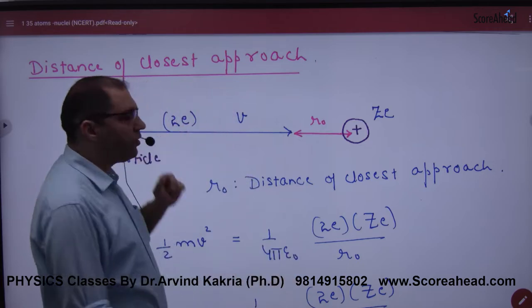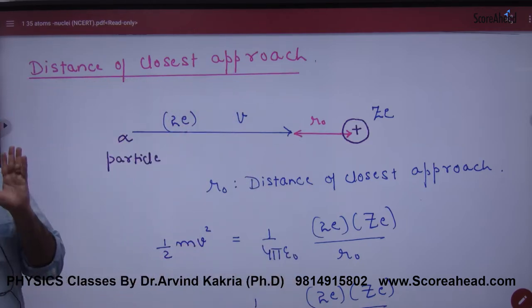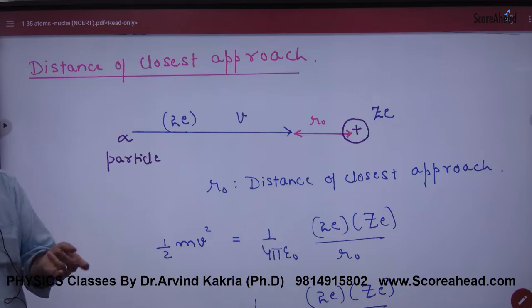So how much further it goes? R-naught. This R-naught is the distance of closest approach. How far the alpha particle goes, this distance is called the distance of closest approach.